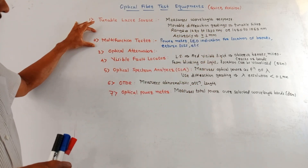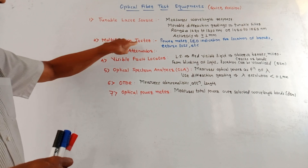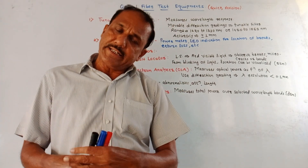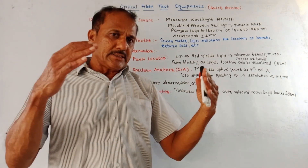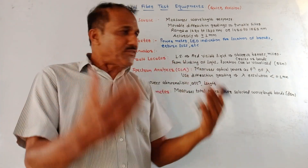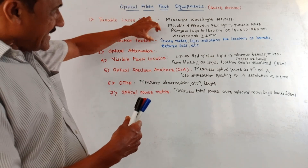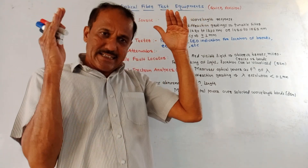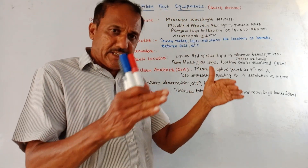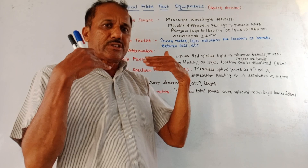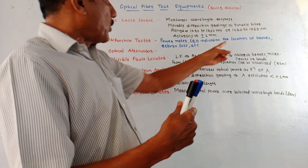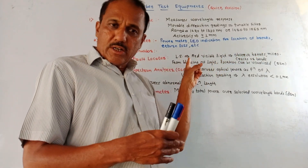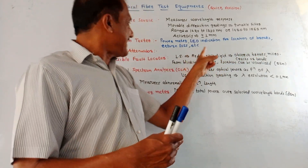Next test equipment is the multifunction tester. It performs different functions — it contains a power meter and an LED indicator which gives visual indication for the location of breaks, return losses, etc.